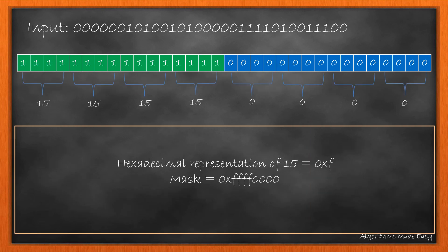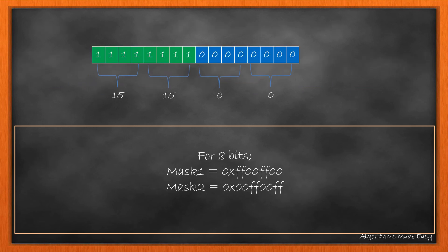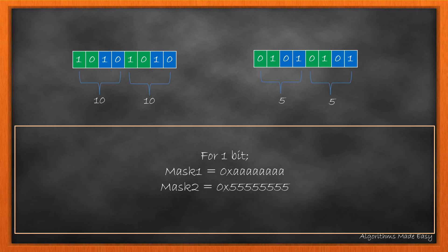Now let's see how to find the value for the mask. For finding a 16-bit mask in mask 1, we want the first 16 bits as 1 and the second 16 bits as 0. If we write these in hexadecimal format, we know 1111, or 15 in hex, is F. So the mask becomes FFFF0000. Similarly, mask 2 will become 0000FFFF. If we take an 8-bit representation, the mask becomes as follows. Similarly for 4 bits, 2 bits, and 1 bit.